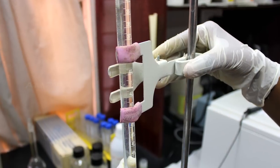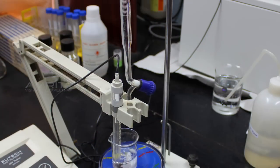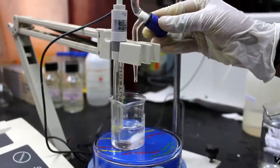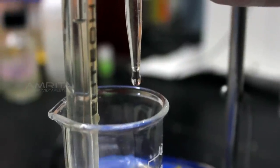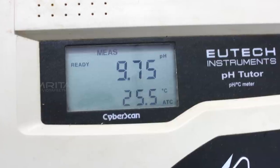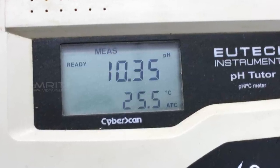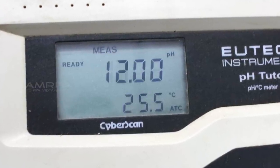Now clamp the buret containing 0.1 molar NaOH to the stand and slowly add aliquots of 0.3 ml NaOH into the beaker containing 0.1 molar glycine. Note down the pH reading after each addition of NaOH till the pH reaches above 12.